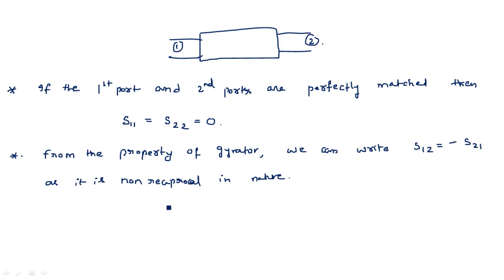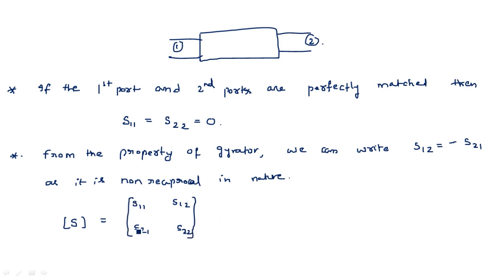Now with all four parameters determined, we can substitute them into the S-matrix. The S-matrix becomes S11=0, S12, S21=−S12, S22=0. Among all these four parameters, the only unknown remaining is S12.